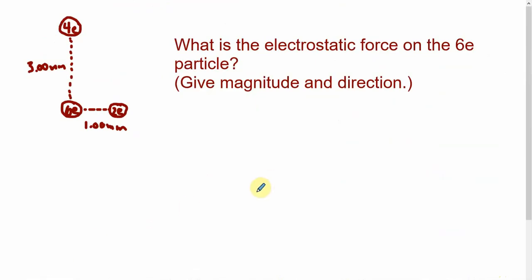Alright. What is the electrostatic force on the 6E particle? So, let's suppose we have a 6E particle. Maybe it's an ion that has lost six electrons. So, it's got a plus 6E charge. And there's a plus 2E charge right here. And there's a plus 4E charge right here. Three millimeters up this way. One millimeter up this way. We want to know what the force is on this guy. So, we have to figure out what the force is from this guy and from this guy. And we have to add them together.